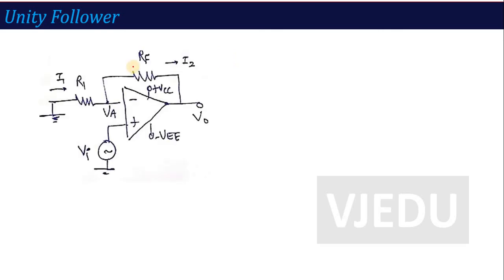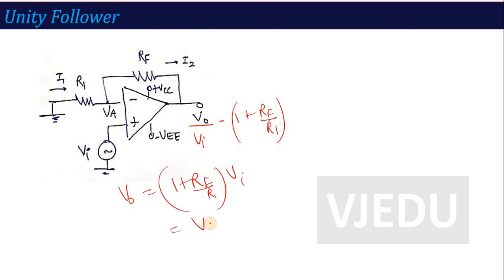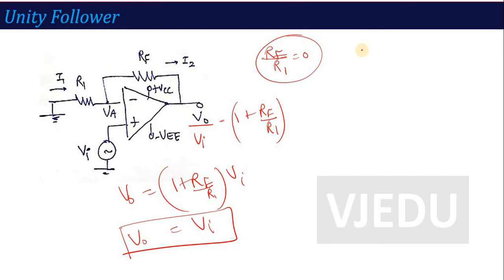The next application is the unity follower. Starting from the non-inverting amplifier gain expression V0/Vi = 1 + Rf/R1, if we make Rf/R1 = 0, then V0 = Vi. This is achieved when R1 = ∞ (open circuit) and Rf = 0 (short circuit). The resulting circuit is called a unity follower or voltage follower, where the output simply follows the input.